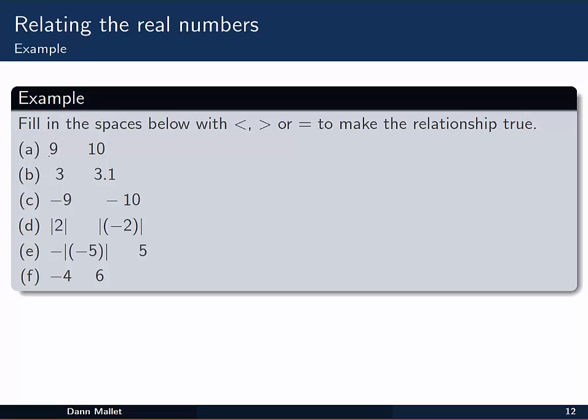Alright, let's take it one at a time. We've got here 9 and 10. Well, 9 is, well it's certainly not equal to, 9 is less than 10. So we can fill that one in, 9 less than 10. The next one, 3 and 3.1, thinking about where they sit on a number line. We'd have 3 would sit about here. 3.1 is a bit more than that, so it's over there. So we can say that 3 is less than 3.1.